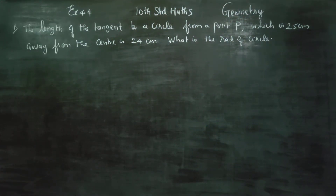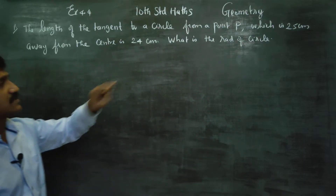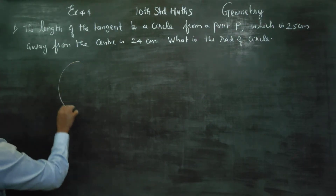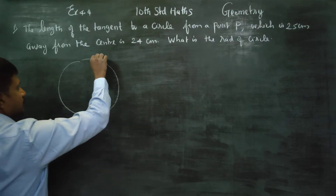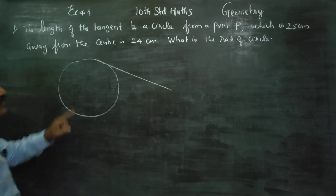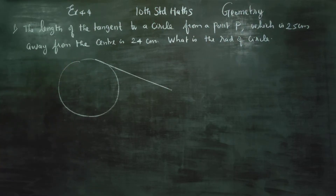Dear 10th standard students, in exercise 4.4, sum number 1: the length of the tangent to a circle from a point P, which is 25 centimetres away from the centre, is 24 centimetres. What is the radius of the circle?